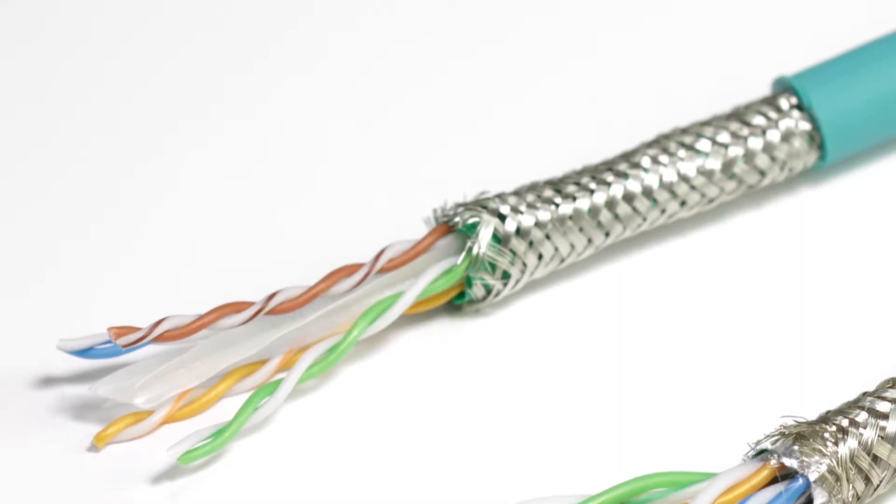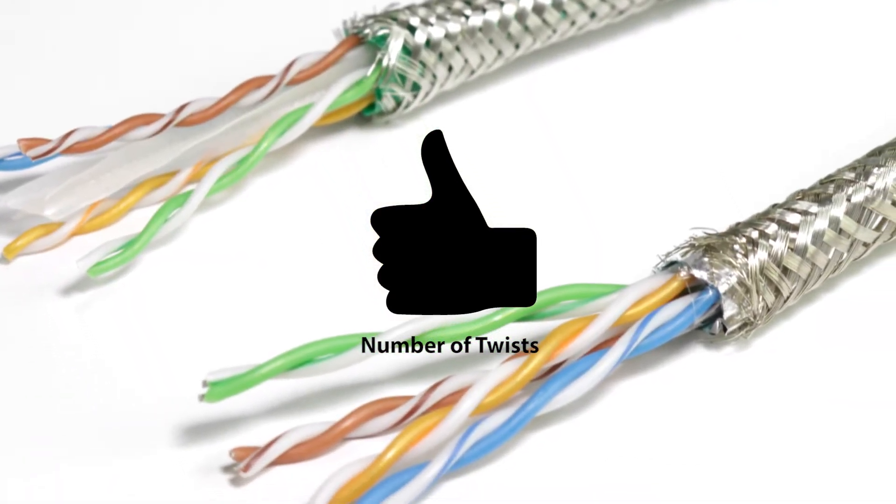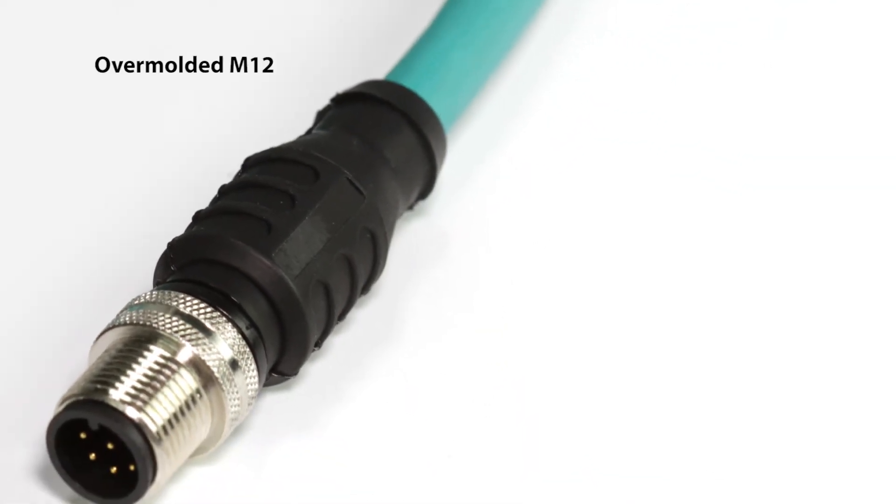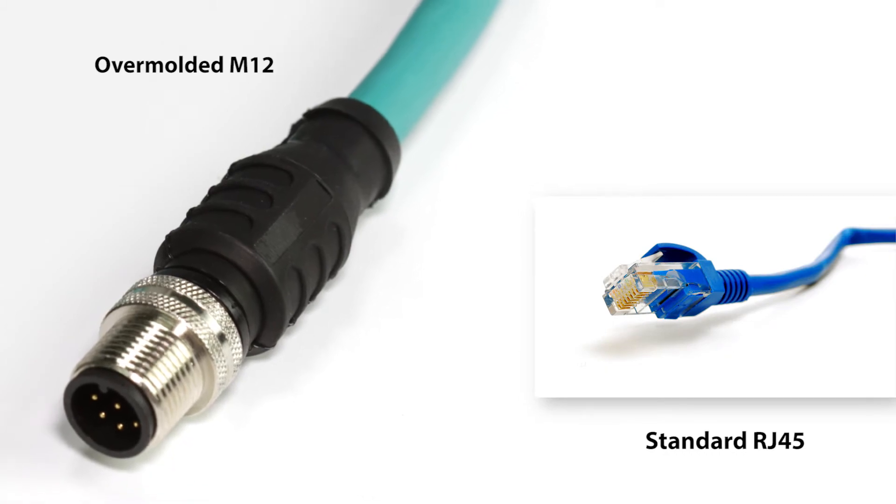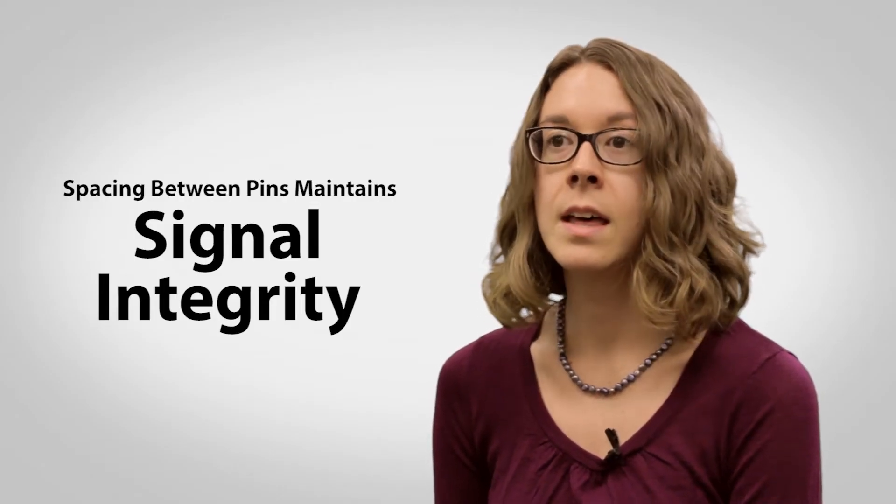For any Ethernet connector, the number of twists must remain at an acceptable level throughout the connector. An overmolded M12 is used for industrial Ethernet because it is considerably more robust and rugged than the RJ45. And the spacing between pins maintains signal integrity. This is what makes it ideal for the factory floor.